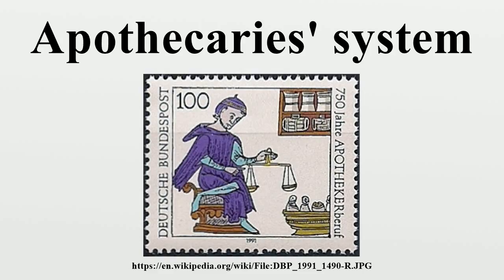It divides a pound into 12 ounces, an ounce into 8 drams, and a dram into 3 scruples or 60 grains. This exact form of the system was used in the United Kingdom; in some of its former colonies it survived well into the 20th century.